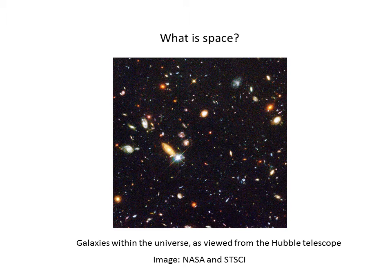In our everyday way of thinking about it, we think about outer space. This is a picture from the Hubble telescope showing all the different galaxies within the universe. But in our day-to-day lives, we're more interested in terrestrial space — that is, how we navigate through our everyday environments on the Earth.